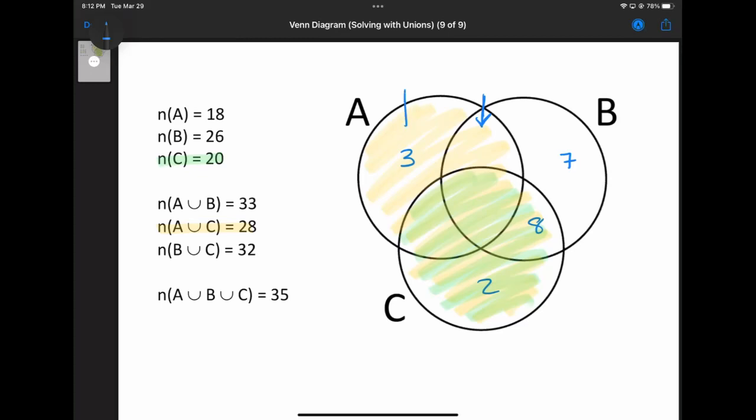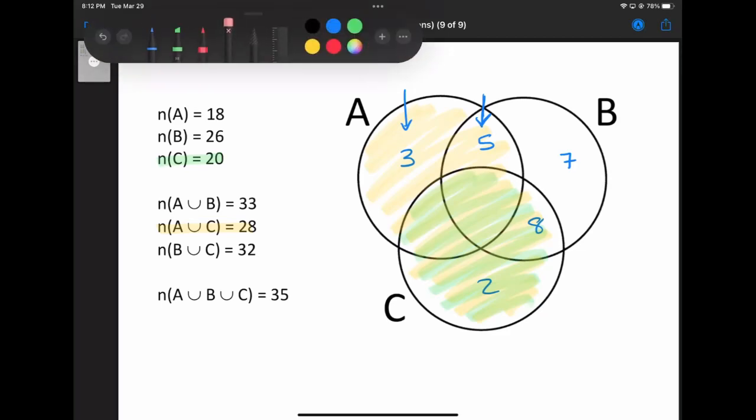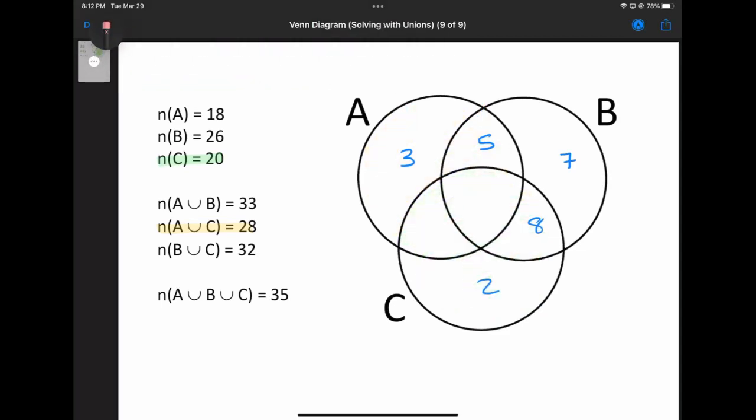And then finally, I think we can do the last one. If we take a look at B and C together, I'm going to try and get you to visualize this without the colors this time. If we take a look at B and C, B and C together have a total of 32. And just B has a total of 26.